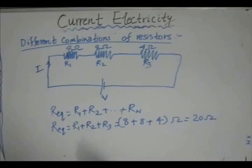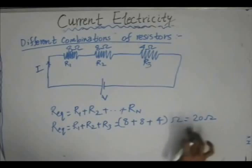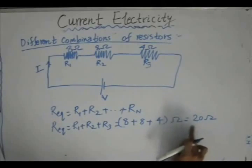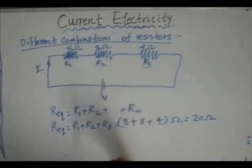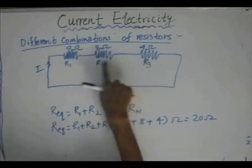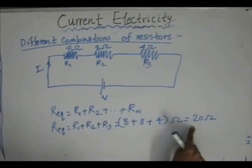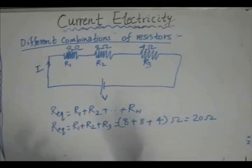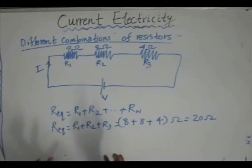A very important observation from this result is that the equivalent resistance of 20 ohm is larger than even the largest individual resistance present. The maximum individual resistor value is 8 ohm, yet the result is higher than that. So if we want to increase the resistance of a circuit, we can connect a large-value resistor in series, which will increase the overall resistance.